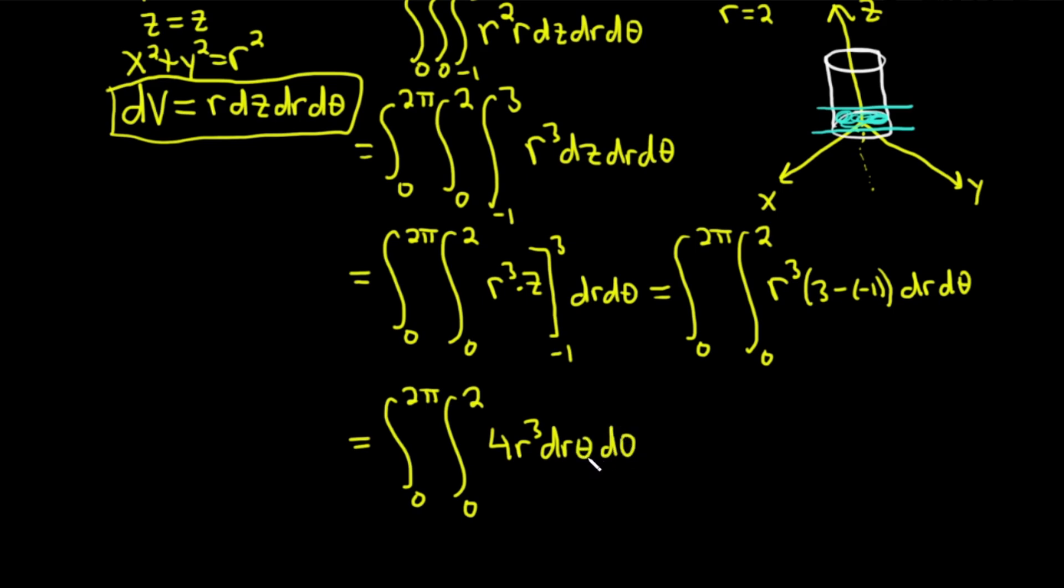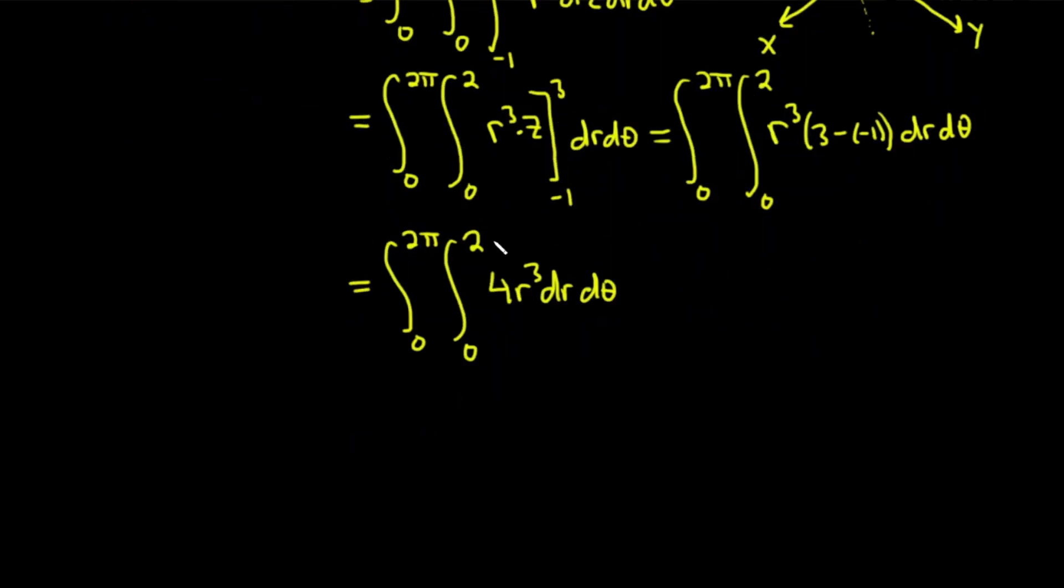Okay? I got messed up there. It's dr, d theta. There we go. Too many r's and too many thetas. All right. So we integrate with respect to r, and when you do that, you basically get 4 r to the fourth over 4. Because to use the power rule, you add 1 and divide. So you just get r to the fourth. So this is going to be the integral from 0 to 2 pi. And then here we have r to the fourth, and we're going from 0 to 2, and we have our d theta.